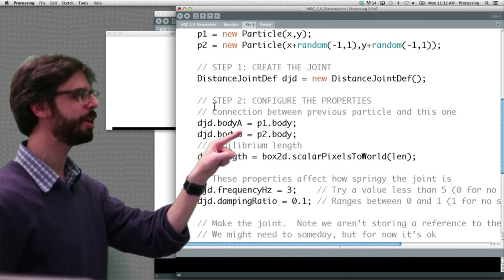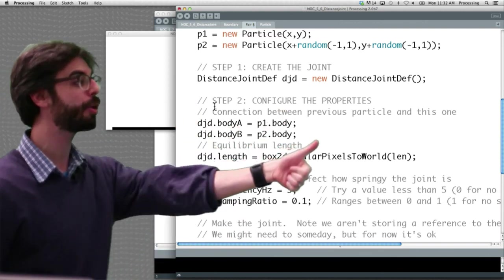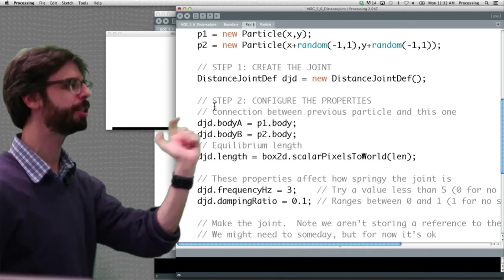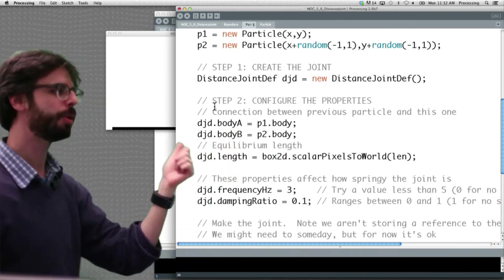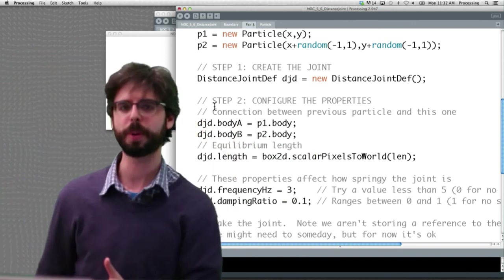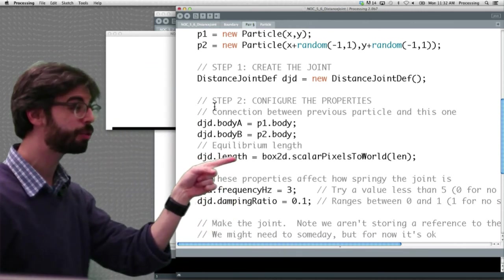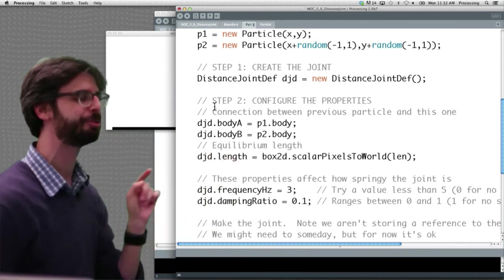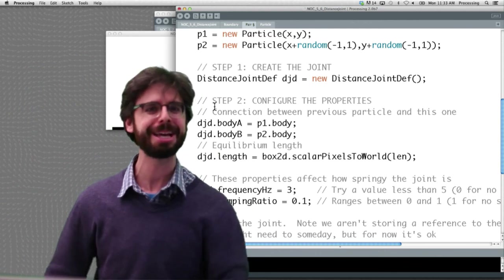And this is what we're doing right here. We're saying body A of the joint is particle one's body. Body B of the joint is particle two's body. And then we're setting its length, its frequency, and its damping. Those are those properties right there.